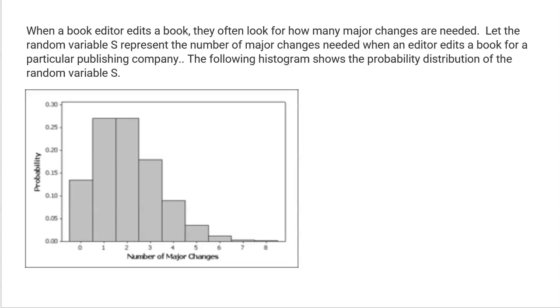Here's another one where we see a graph as our probability distribution. When a book editor edits a book, sometimes they have to make some major changes. S represents the number of major changes needed when an editor edits a book. We see in the graph we can have 0, 1, 2, 3, 4, 5, 6, 7, or it looks like there's a slim chance that eight major changes are needed. I would definitely describe this as skewed to the right and unimodal. We see that majority of the time books need one or two major changes, and we definitely see a slow trickle down to the right.